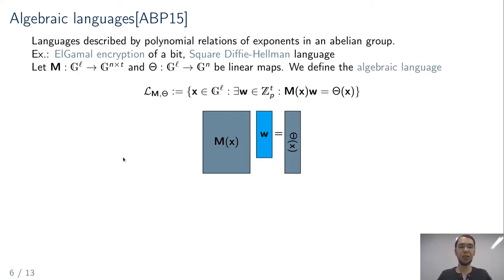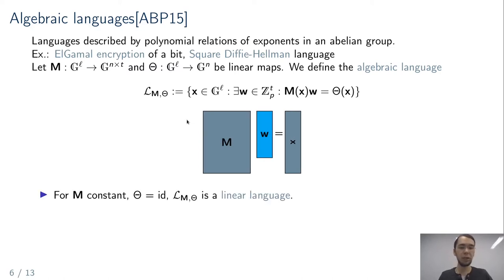Formally, algebraic languages can be described by a language matrix function and a target vector function, both taking the word as input and outputting a matrix and a target vector respectively. A word is in the language if its target vector is in the image of its language matrix. Linear languages are a subset: simply set the language matrix function as a constant matrix and the target vector as the identity function.